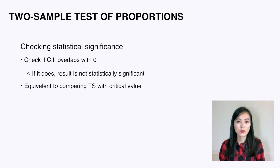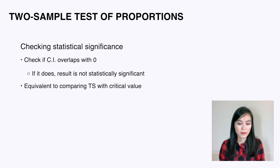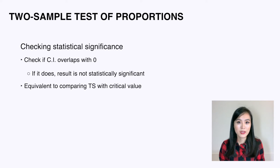Just to mention: we could also use the confidence interval to check statistical significance by checking if it overlaps with zero. If it does, it's not statistically significant. This gives the same result as comparing the test statistic with the critical value.